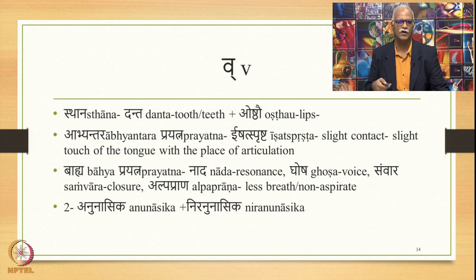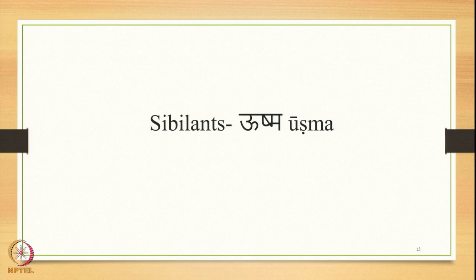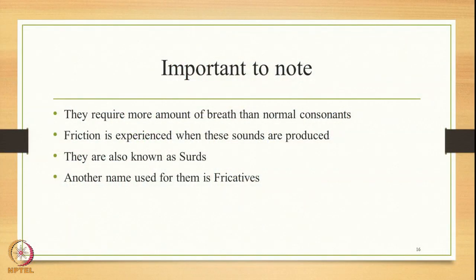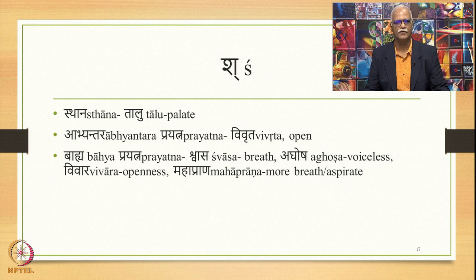So these are the four Antastha consonants, which are semivowels. Now let us go to the next set of consonants also termed as sibilants or fricatives, also known in Sanskrit as Ushma. An important point to note about them is that these sounds require more breath than normal consonants, and friction is experienced when they are produced.